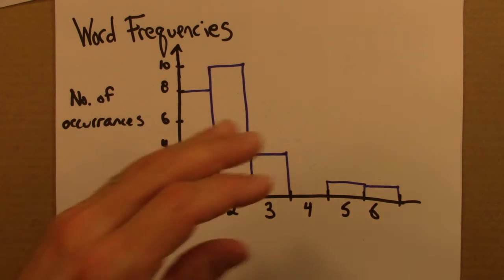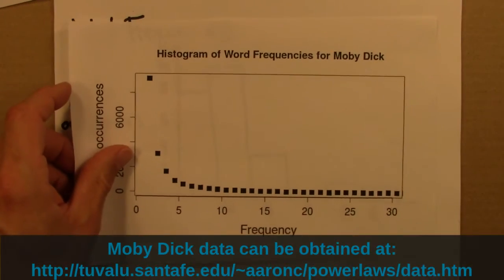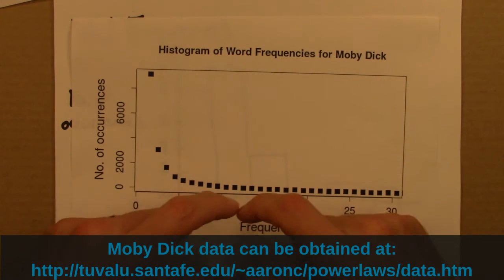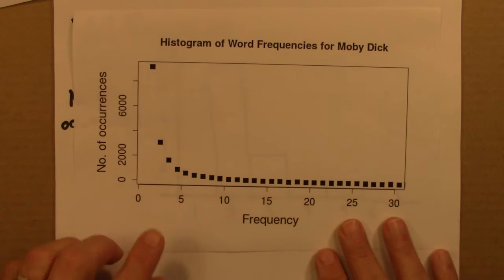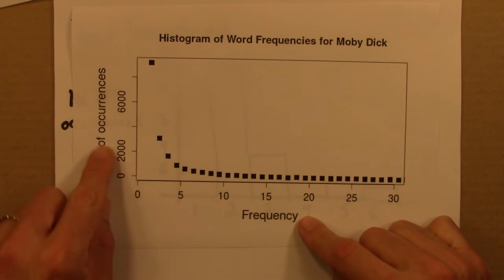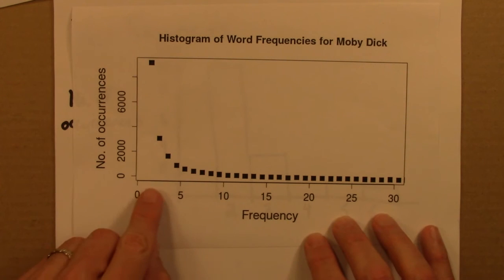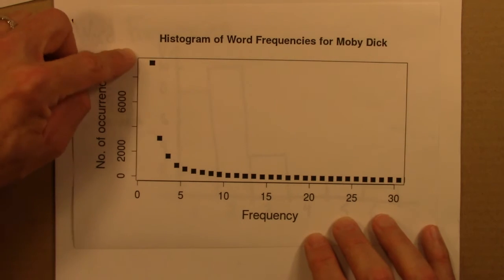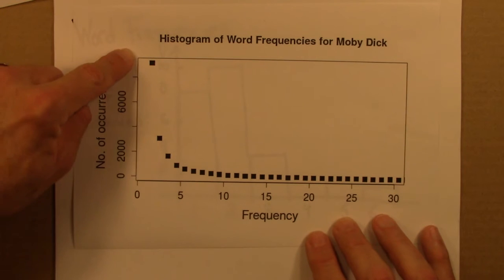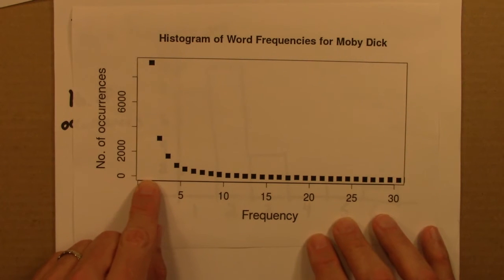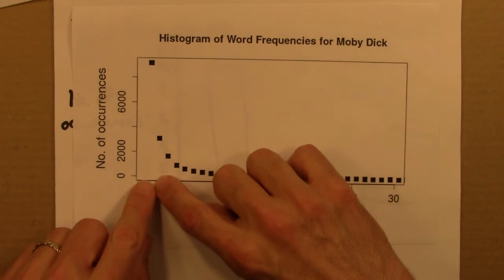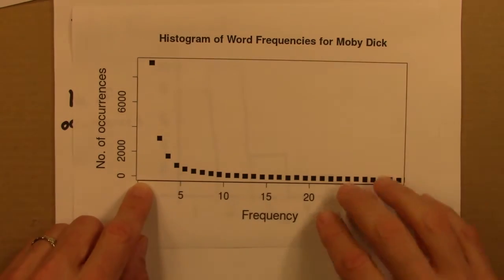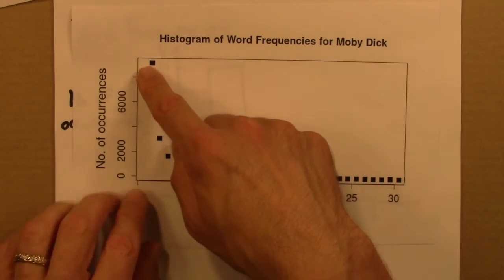Here's the result of making a histogram for word frequencies from Moby Dick. This is the frequency, and this is the number of occurrences. This says that there are something like more than 8,000 words that appear only once. There are around 3,000 words that appear twice, and fewer words still that appear three, four, or five times. So most words in this novel — the most common frequency — is 1, and then it drops off very quickly.